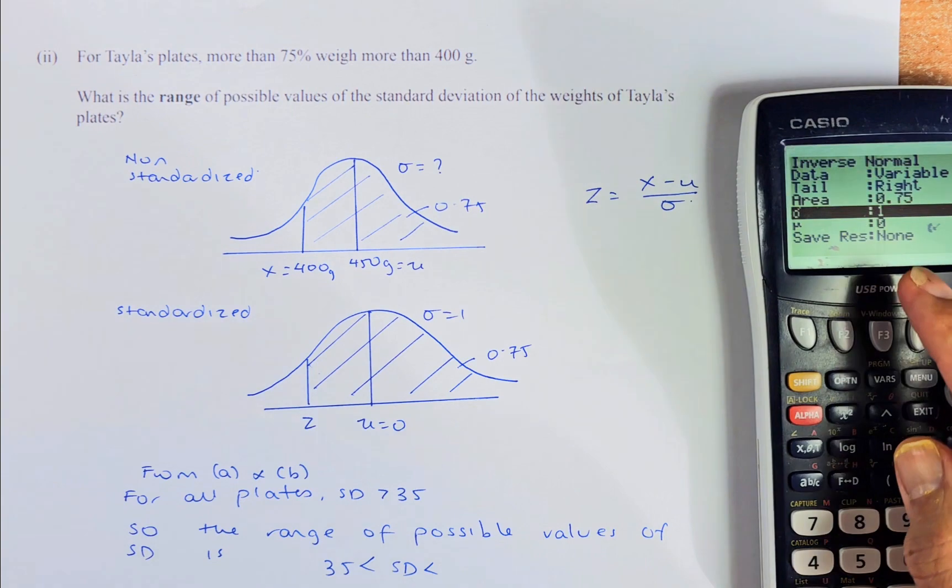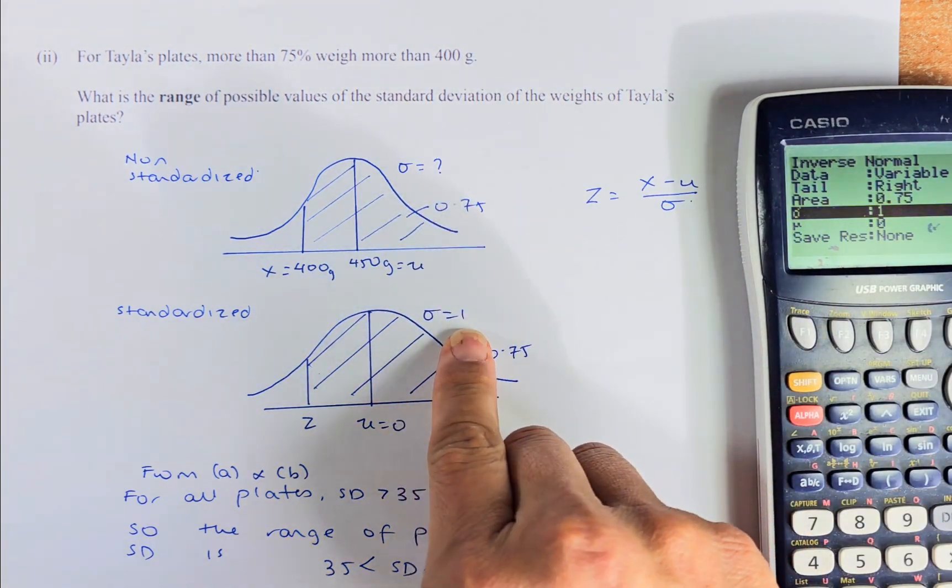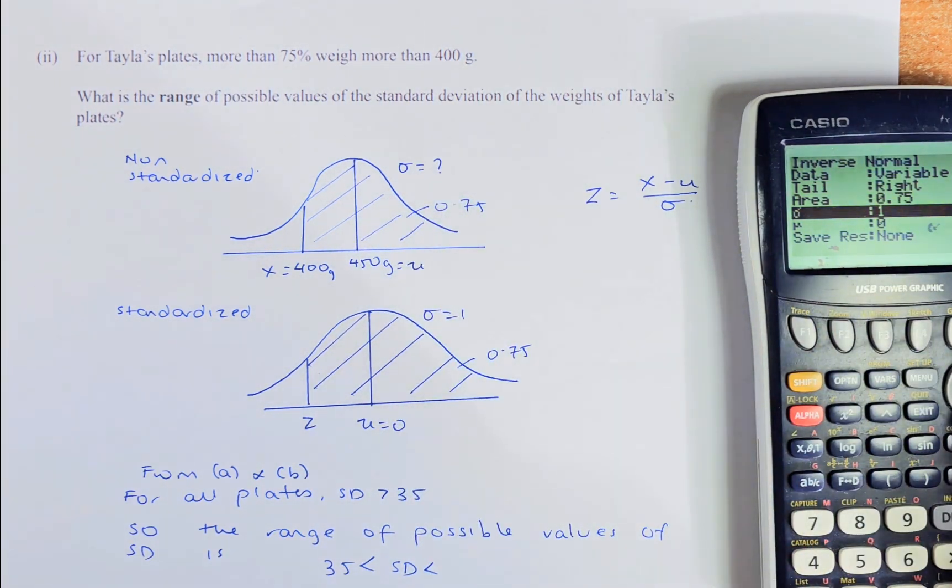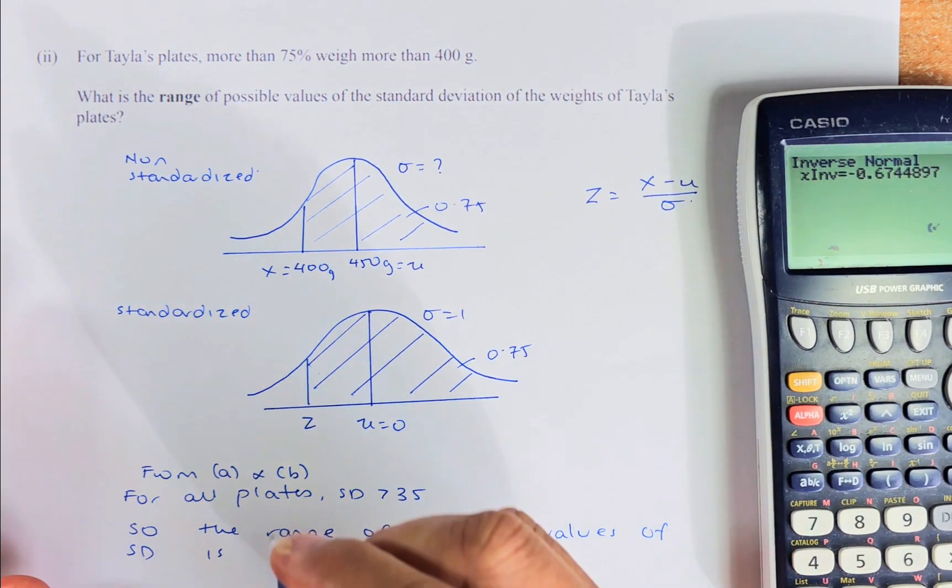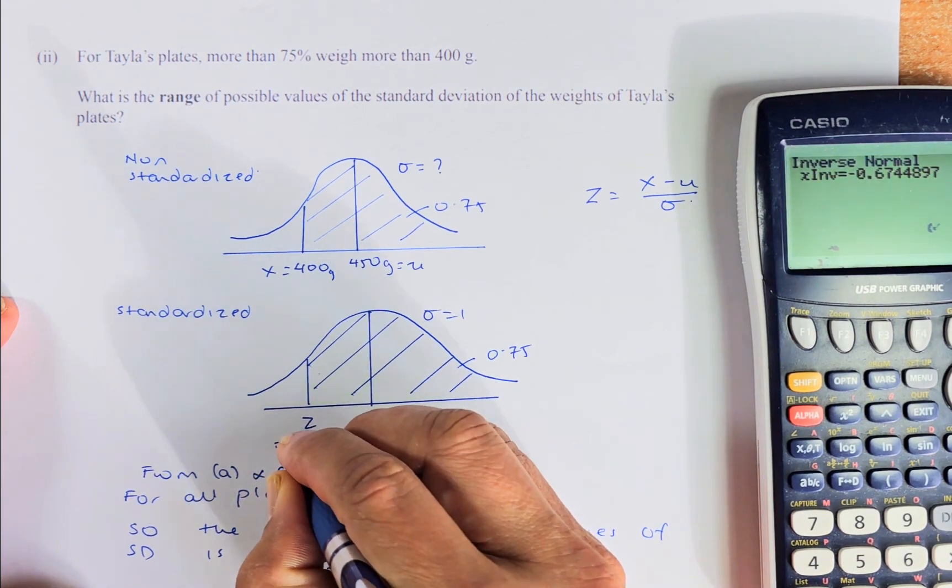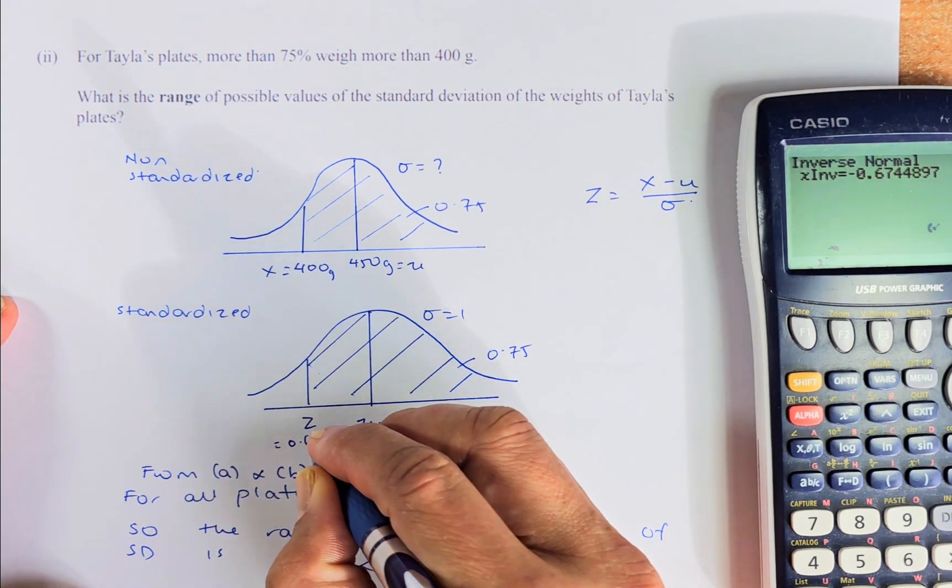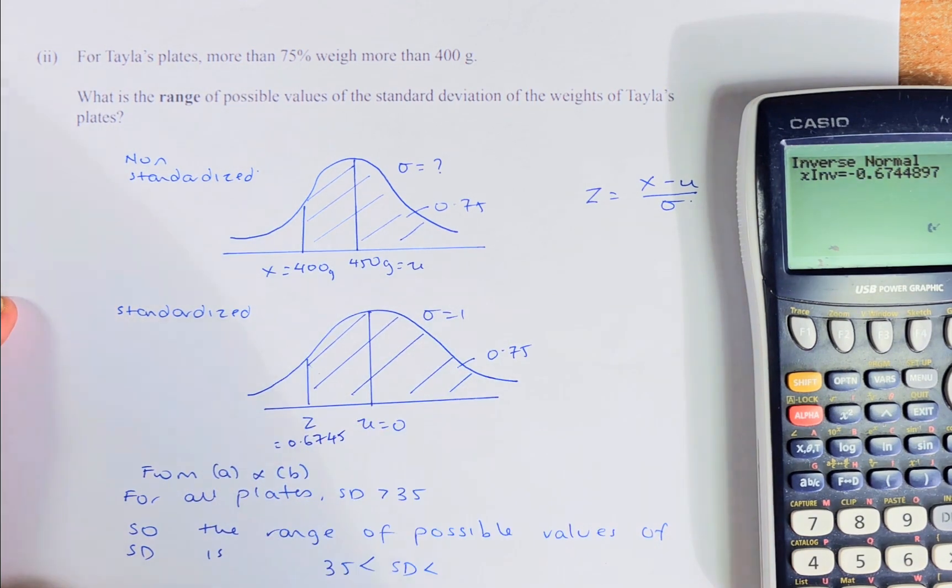The area is 0.75 because the area is 0.75. Click in that. The sigma is going to be 1 because it's standardized. And the mu is 0. Once you've done that, execute the button and your value for Z is going to be 0.6745. That's your Z value.